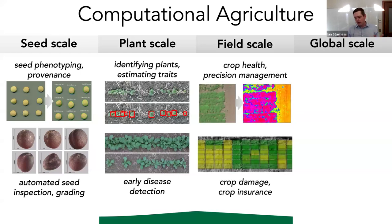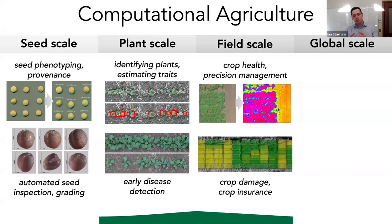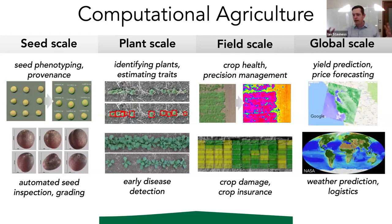At the field scale, this is typically where we think of computation benefits landing with farmers and growers — doing things like predicting crop health, generating precision management prescriptions, looking at crop damage or estimates for crop insurance. Nowadays, growers and agronomists are also looking at the plant scale to dial in management at a very fine level.